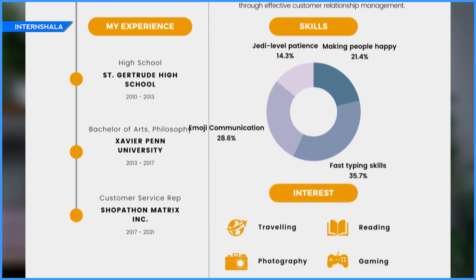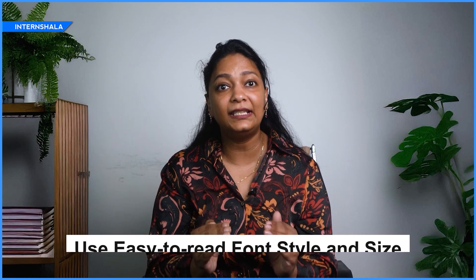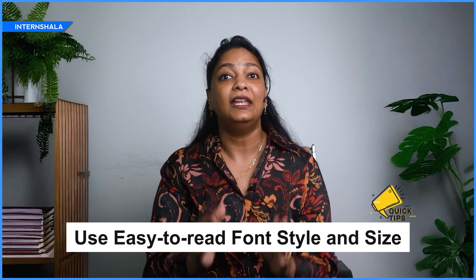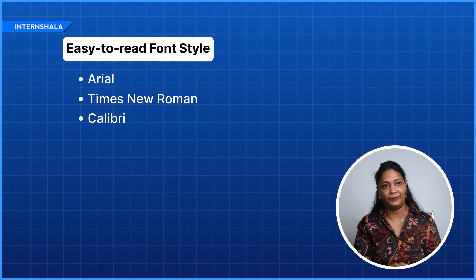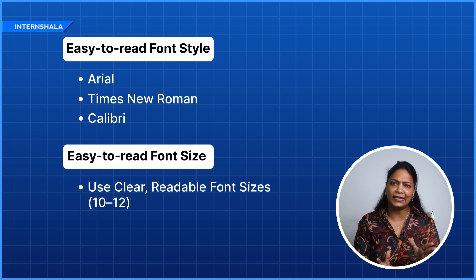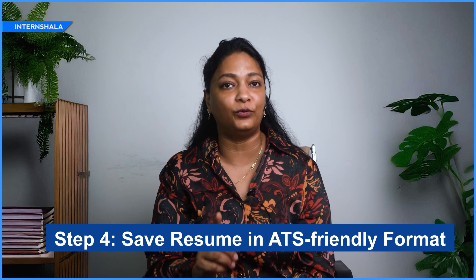These design choices might look nice but they confuse ATS and cause it to overlook important details. If you want the ATS to easily read all your information, use fonts that are easily detected by ATS software, such as Arial, Times New Roman, or Calibri. Also use an easy-to-read font size like 10 or 12 to make sure your text is clear. Finally, save your resume in the correct format, as these are the best choices compatible with most ATS systems.